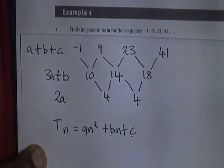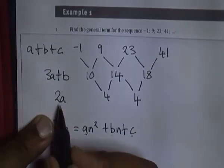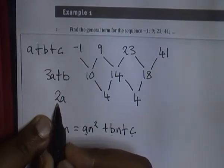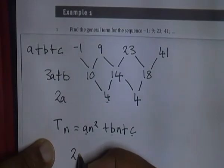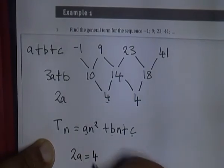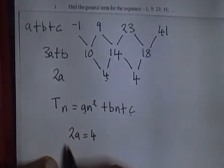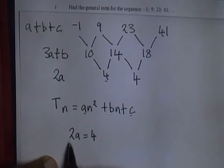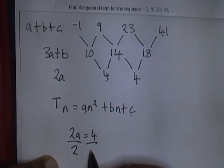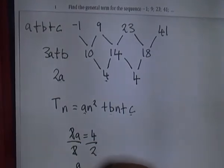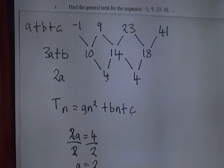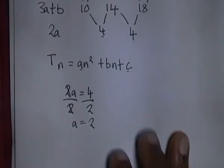First of all, how do we work out the value of A? Remember what we said, 2A becomes equal to the second difference. In this case, 2A becomes equal to 4. We divide by 2 on both sides. A is equal to 2. Now you know the value of A, it is 2.